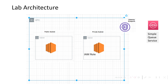Then we will be deploying one interface endpoint which will automatically create one Elastic Network Interface in this private subnet. And also during this creation, we have to attach one security group to it.